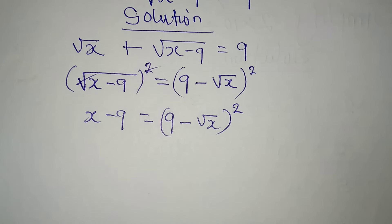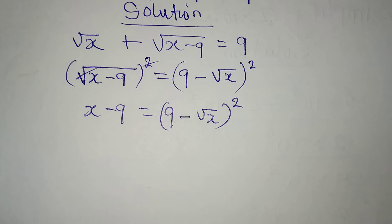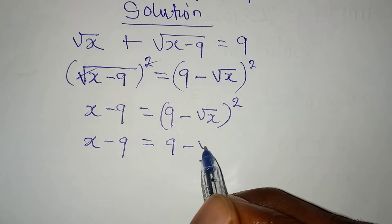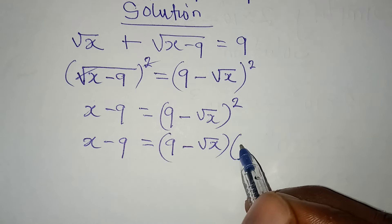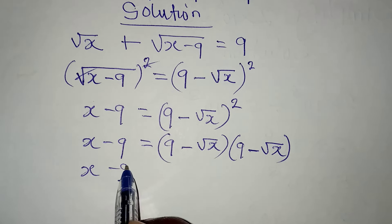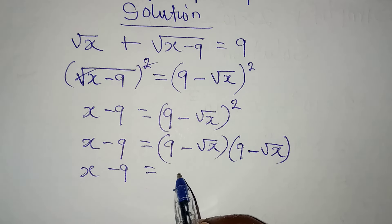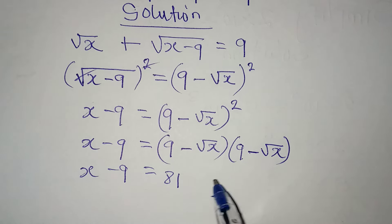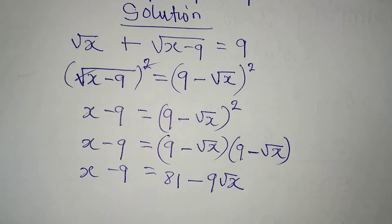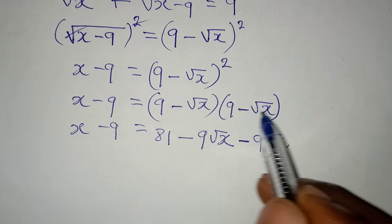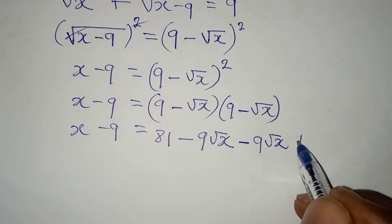Now I'm going to expand the right hand side. So x minus 9 equals 9 minus square root of x, times 9 minus square root of x. Expanding: 9 times 9 gives 81; 9 times negative square root of x gives minus 9 root x; negative root x times 9 gives minus 9 root x; and negative root x times negative root x gives plus x.